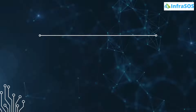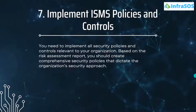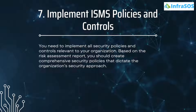Number seven is to implement the ISMS policies and controls. Once you have the ISMS policies and the SOA filing, you need to implement all security policies and controls relevant to your organization, based on the risk assessment report. You should create comprehensive security policies that dictate the organization's security approach.